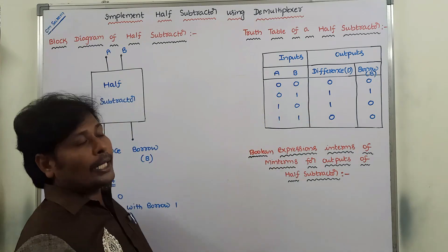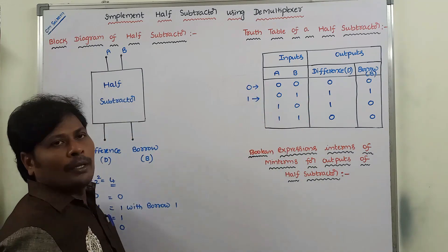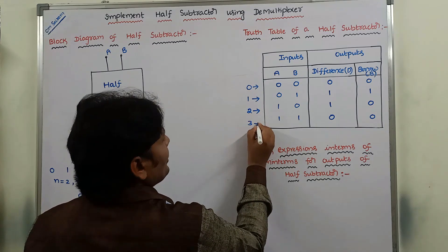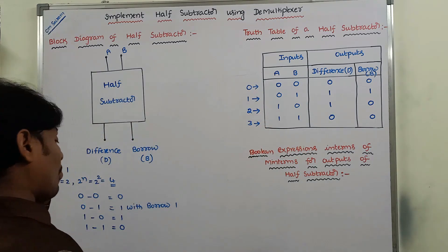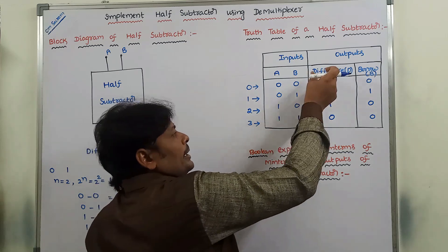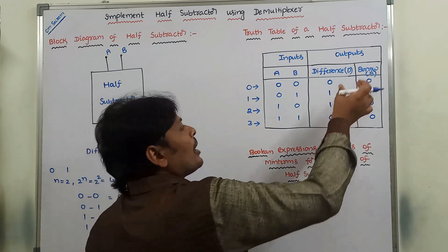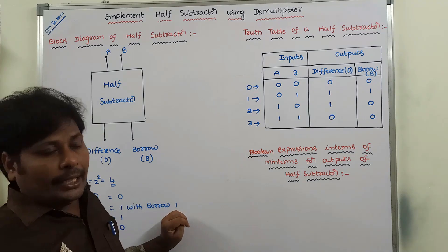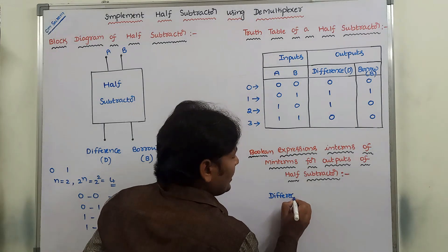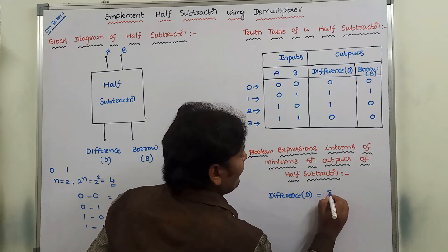The input combinations 0,0; 0,1; 1,0; and 1,1 have equivalent decimal values 0, 1, 2, and 3 respectively. Once we construct the truth table, the difference output can be represented as a sum of minterms — sigma (m) — and similarly for each output of the half subtractor.